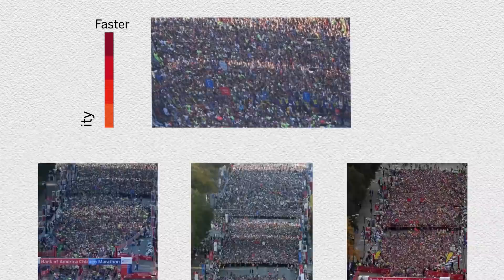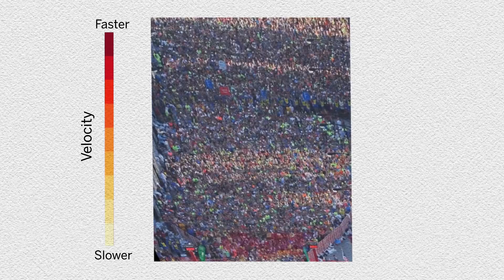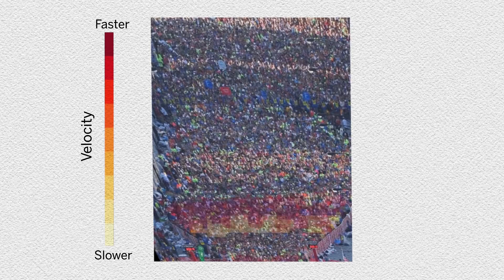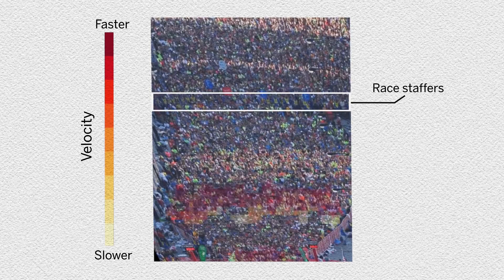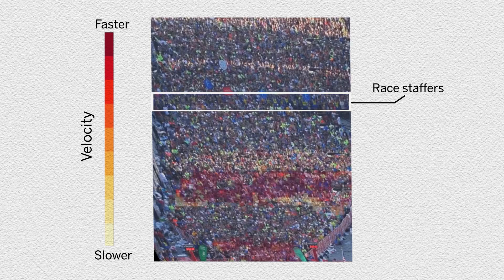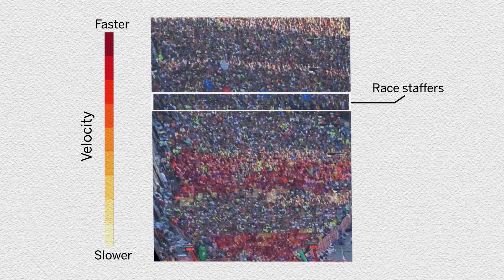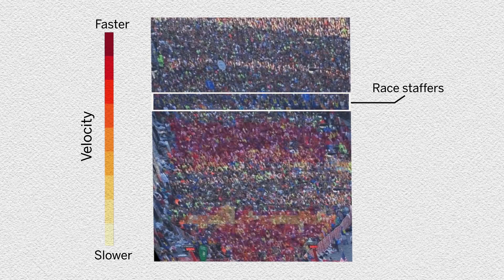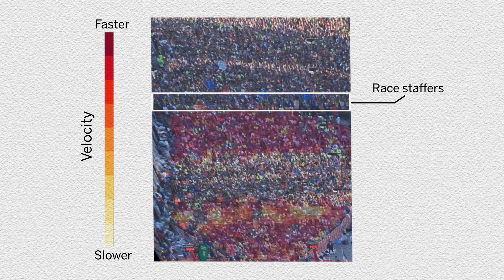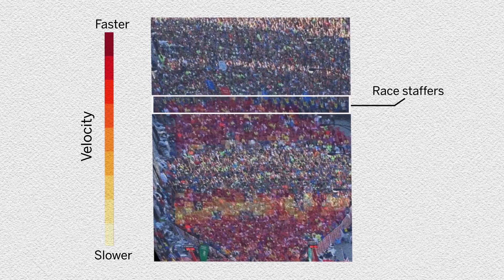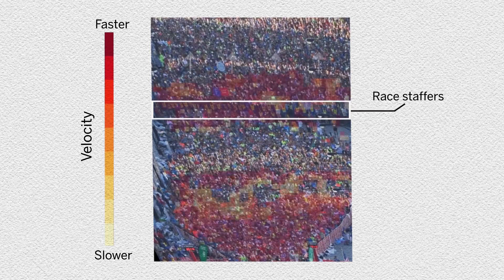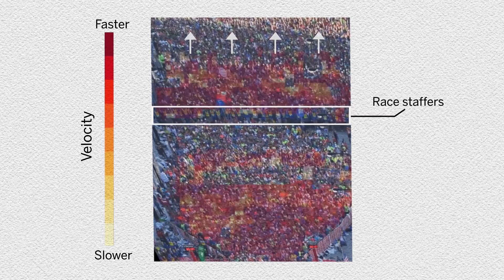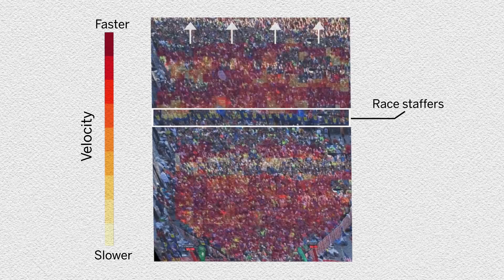Scientists used an algorithm to track the speed of runners as they moved to the starting line. When directed by race staffers, runners shuffled forward several meters before stopping and starting up again. The speed and density changed and moved backward through the pack of runners, like a wave.